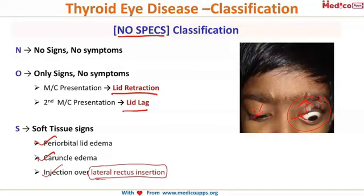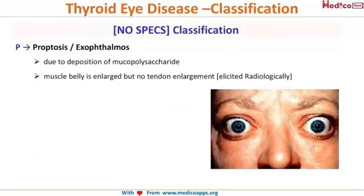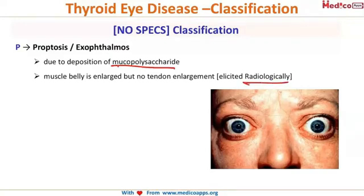P stands for proptosis or exophthalmos. The mechanism is due to deposition of mucopolysaccharides on the muscle belly, causing enlargement and pushing the eye forward, resulting in proptosis. The characteristic radiological feature is that the muscle belly will look enlarged, however the tendon will be normal — that tells you it is thyroid ophthalmopathy.